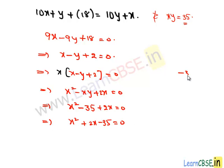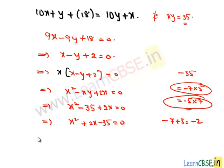Here we have the constant term negative 35. Its factors are negative 7 times 5 or negative 5 times 7. So when we add the factors negative 7 plus 5, we get negative 2, which is not equal to coefficient of x. So we take the factors negative 5 and 7.